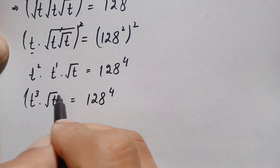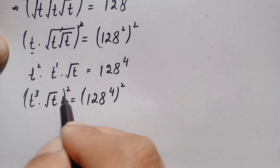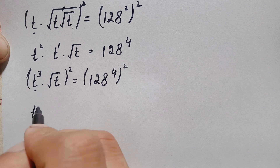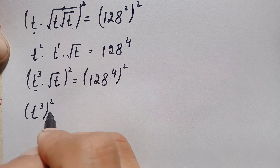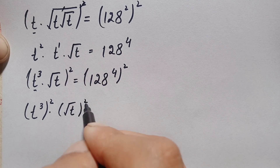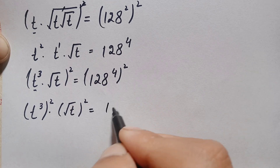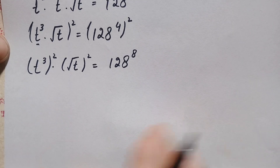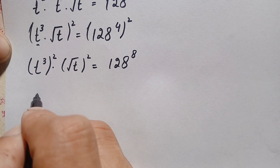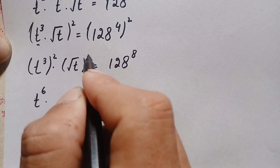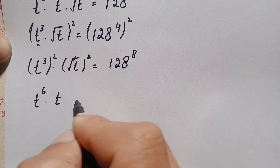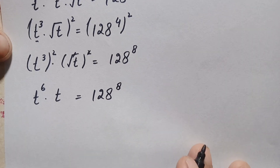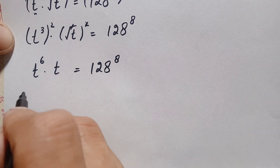So again we will take the square on both sides. Taking the square over t cubed and the square root of t: t cubed whole squared gives t raised to power 6, and the square root of t squared cancels to give just t. On the right side, multiplying the powers: 4 times 2 is 8, so this becomes t raised to power 6 times t is equal to 128 raised to the power 8.